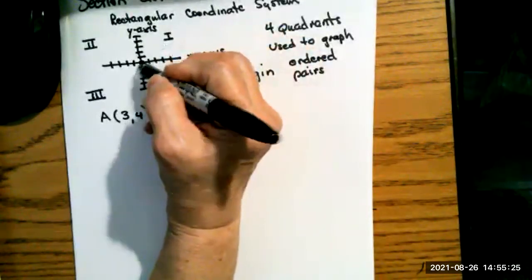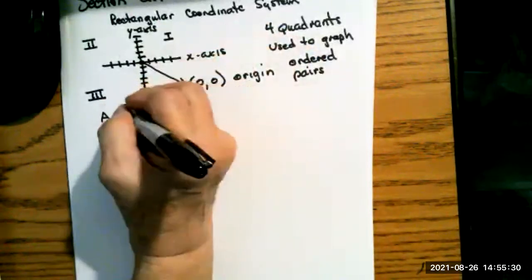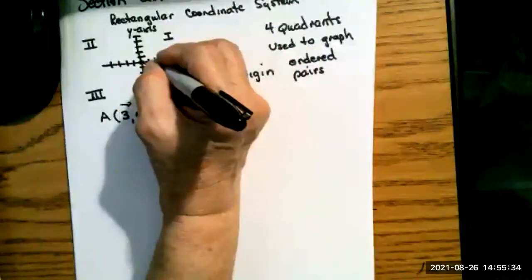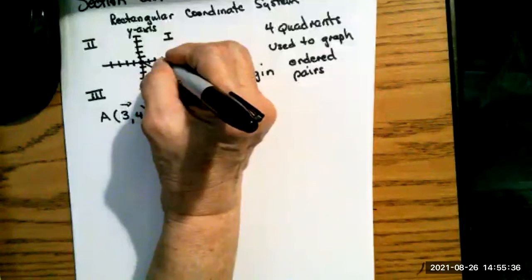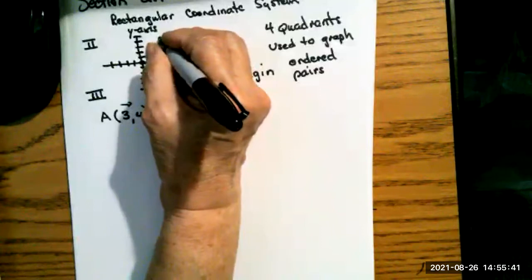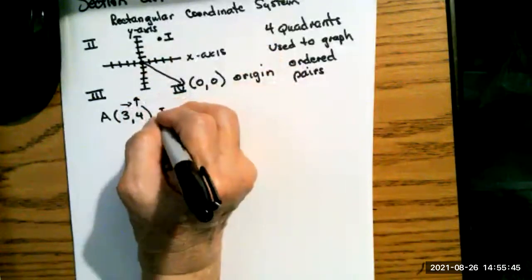Then I use my three because the x values will be left or right. This one's going to be to the right. So I go one, two, three, and then I go up four before I put my point. So that is the point three, four, and I can see that's in quadrant one.